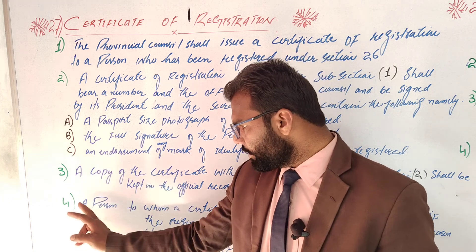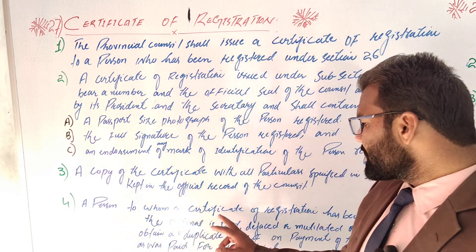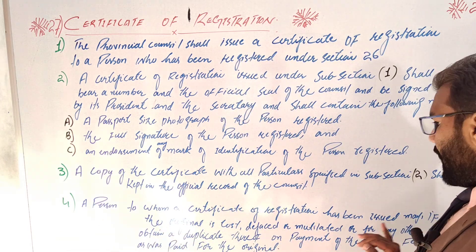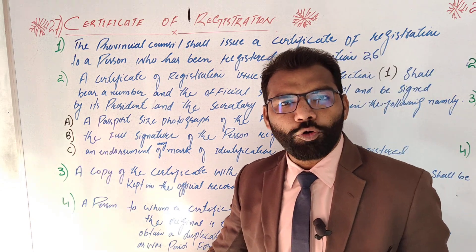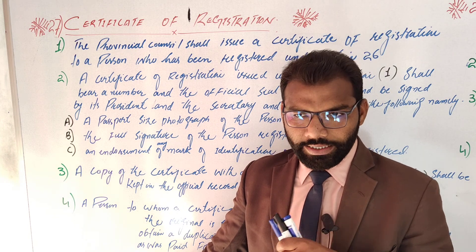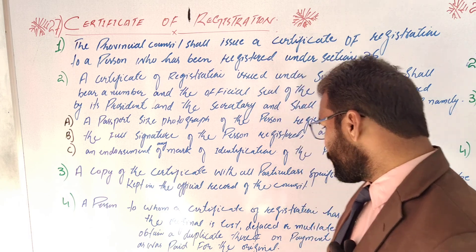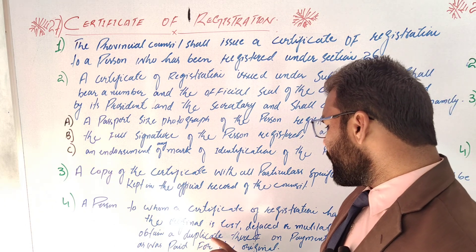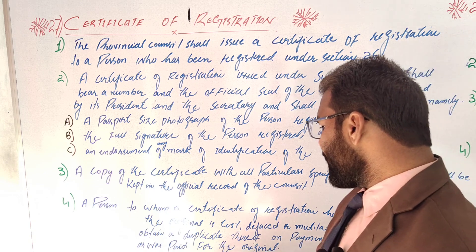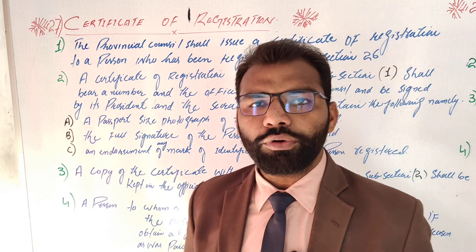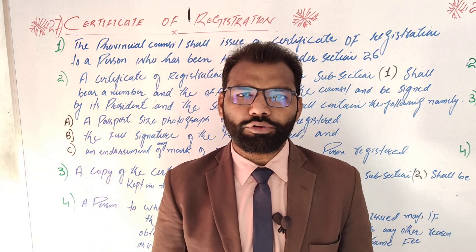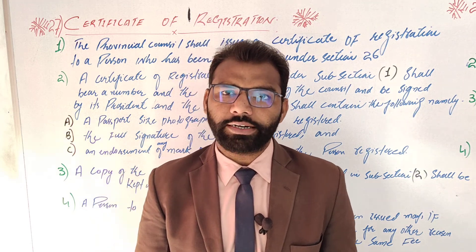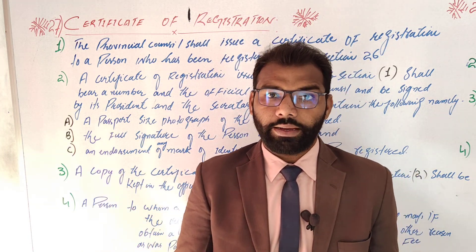Subsection 4: A person to whom a Certificate of Registration has been issued — if the original is lost, defaced, mutilated, or for any other reason — may obtain a duplicate thereof on payment of the same fee as was paid for the original. The duplicate certificate is available from the council's official record, and the fee is the same as for the original, approximately 1000, though policies may change.